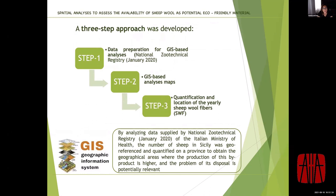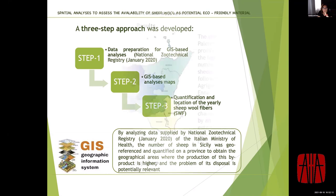A three-step approach was carried out. The first step was preparation for GIS-based implementation and data supply. Data were supplied by the National Geotechnical Registry of the Health Ministry. The second step was the implementation of the GIS. The third step was the realization of tailored maps about the quantification and location of the yearly sheep fiber production in Sicily.